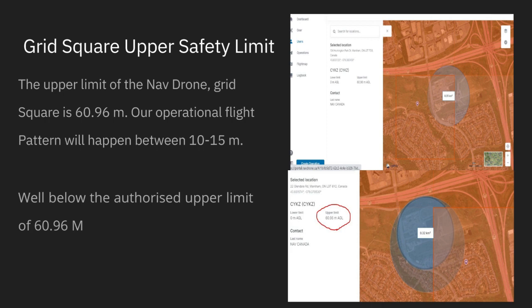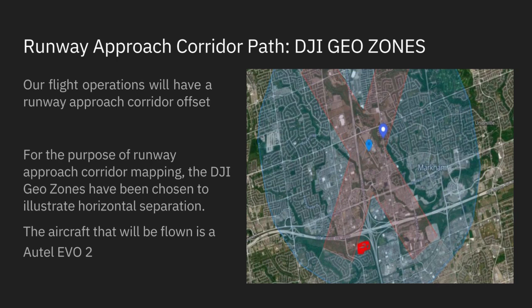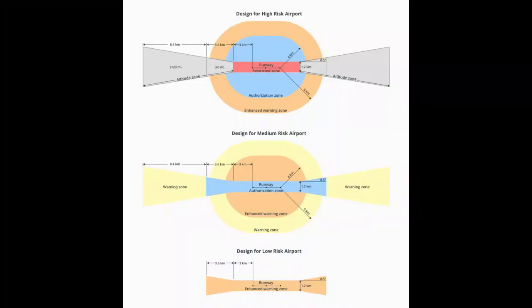There may be some instances where additional warnings appear before your flight can be approved. When planning your flight, it is a good idea to look at the whole picture, factoring in NavDrone approvals as well as DJI geo zones for the appropriate traditional aircraft approach corridors, so you can map your flight accordingly, staying away from critical approach phases of aircraft when they land or take off. The DJI geo zones are used to highlight appropriate horizontal separation distances from aircraft approaches.